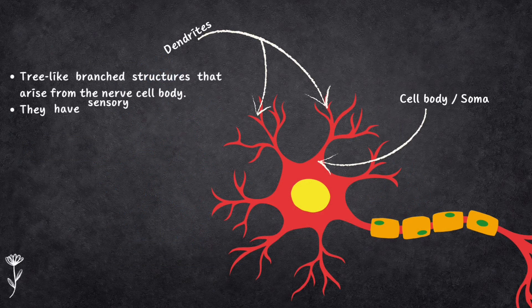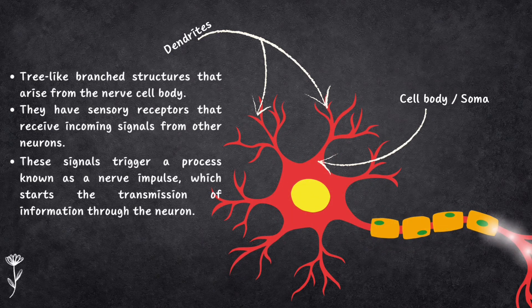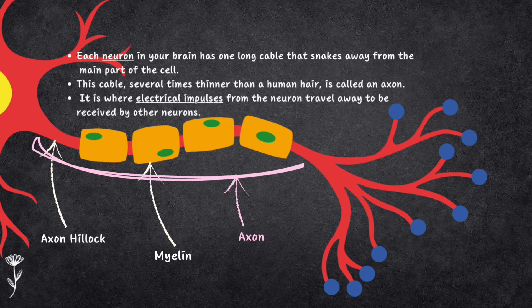Dendrites are tiny branches that stick out from the cell body, kind of like a tree with lots of branches. These dendrites are crucial because they receive incoming signals from other neurons. The axon is a long, skinny cable-like projection that extends away from the neuron cell body — like the highway for nerve impulses, carrying them away from the cell body to their destination. The axon is wrapped in a special fatty substance called myelin, which acts as insulation and speeds up the transmission of signals, making sure messages travel super fast. Axons can be quite long and often branch out to connect with multiple other neurons, forming intricate networks.